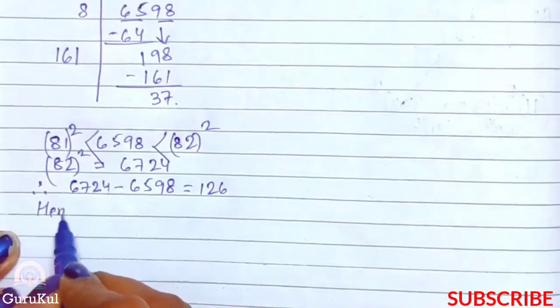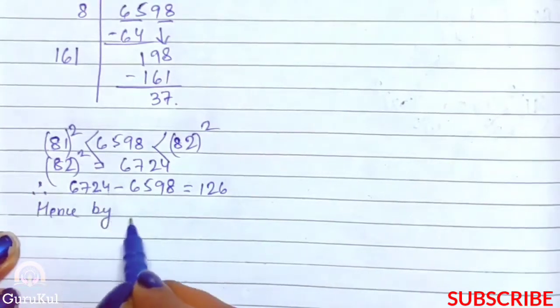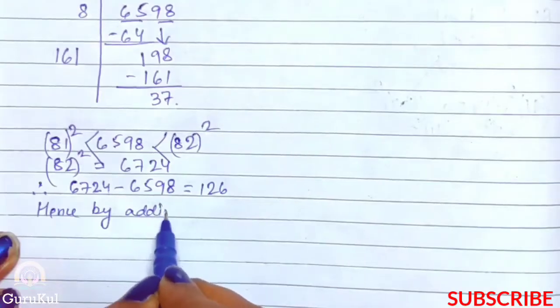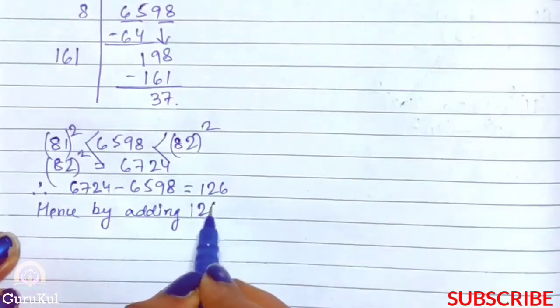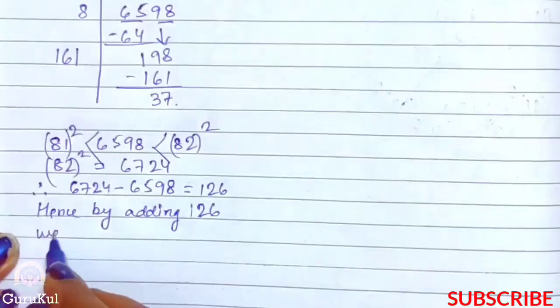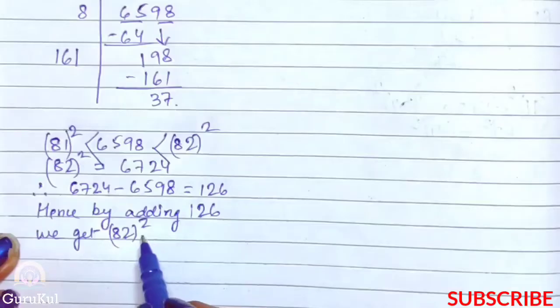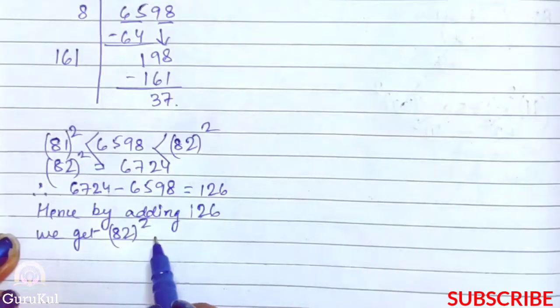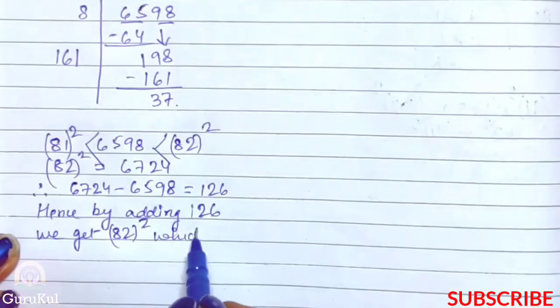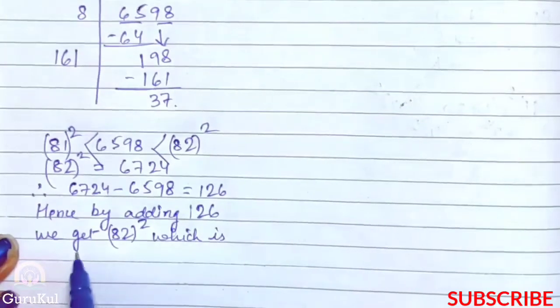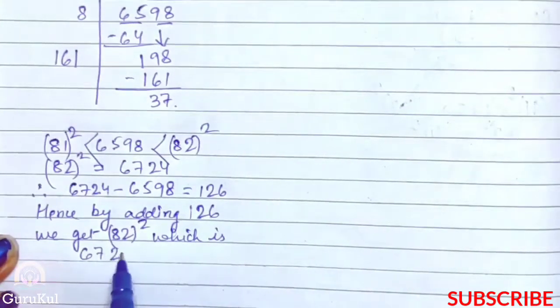So let me continue. So 6724 minus 6598 gives us 126. Hence, by adding 126, we get 82 whole square, which is 6724.